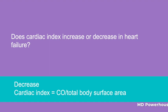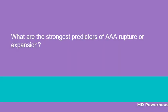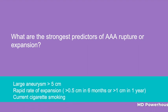What are the strongest predictors of triple-A rupture or expansion? A large aneurysm greater than 5 centimeters, a rapid rate of expansion — that is, more than 0.5 centimeters in 6 months or more than 1 centimeter in 1 year — and current cigarette smoking.